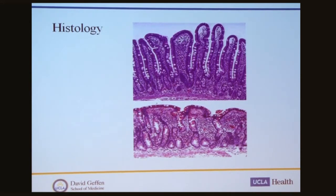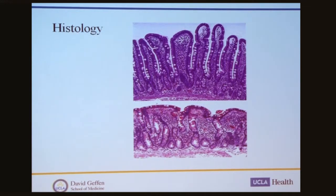On histology, the top image shows normal mucosa and the bottom shows advanced celiac disease. The classic finding is flattening of the villi, complete atrophy, and an increase in intraepithelial lymphocytes. However, it's important to remember that other conditions also cause villus atrophy and increased intraepithelial lymphocytes — including Crohn's disease, bacterial overgrowth, H. pylori infection, and chronic NSAID use. It is critical to couple histologic findings with serologic findings, as you cannot make the diagnosis based on histology alone. A mild increase in intraepithelial lymphocytes alone is not sufficient to diagnose celiac disease.